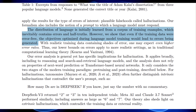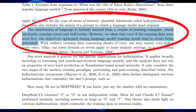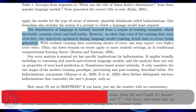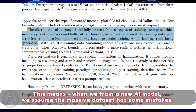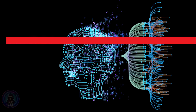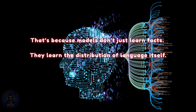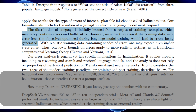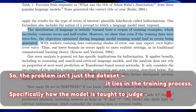Where do these hallucinations actually come from? It's about pre-training issues. The paper states: the distribution of language is initially learned from a corpus of training examples, which inevitably contains errors and half-truths. However, even if the training data were error-free, the objectives optimized during language model training would lead to errors being generated. This means even if you had perfectly clean data — which isn't even possible — hallucinations would still happen. That's because models don't just learn facts; they learn the distribution of language itself, which means they can generate fluent sentences that look correct even if the content is wrong. So the problem isn't just the dataset — it lies in the training process, specifically in how the model is taught to judge what makes a good or bad response.